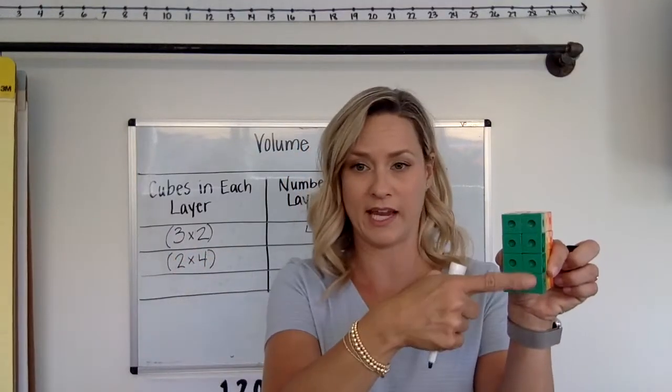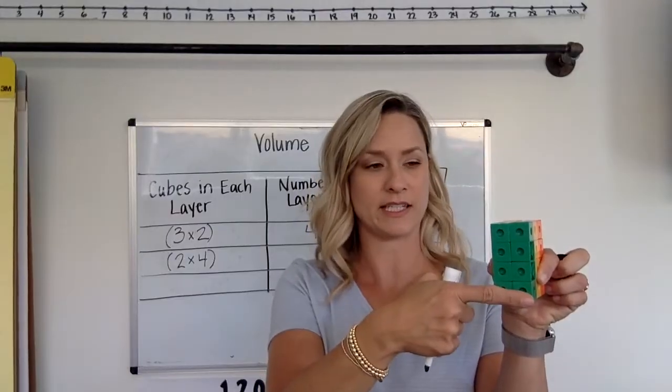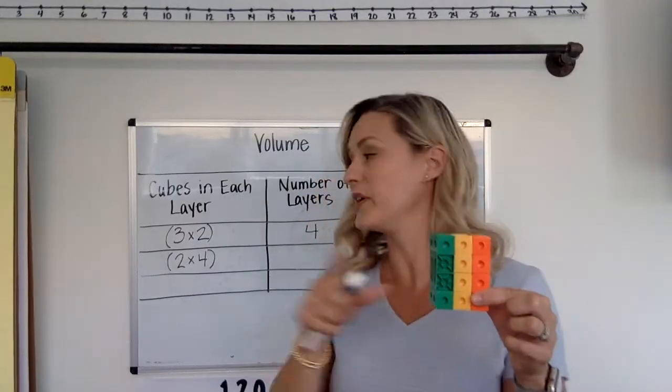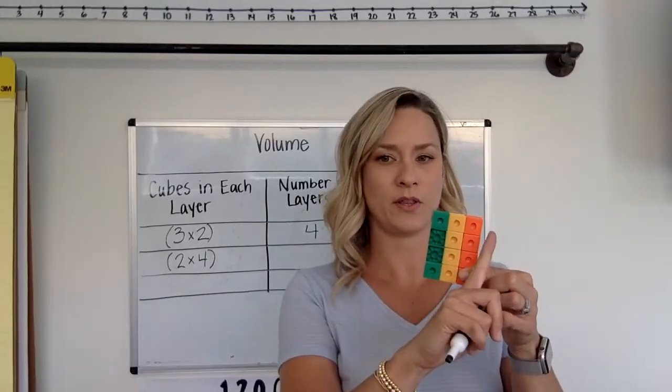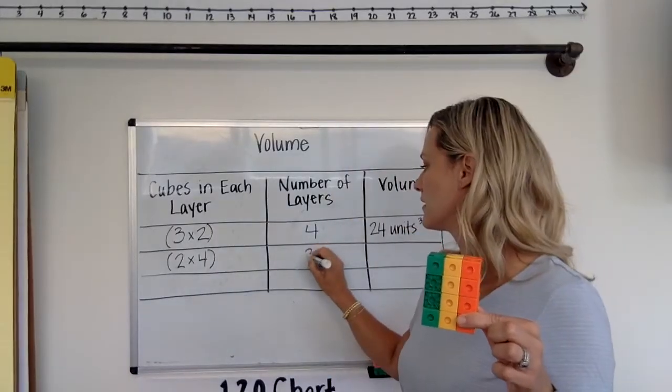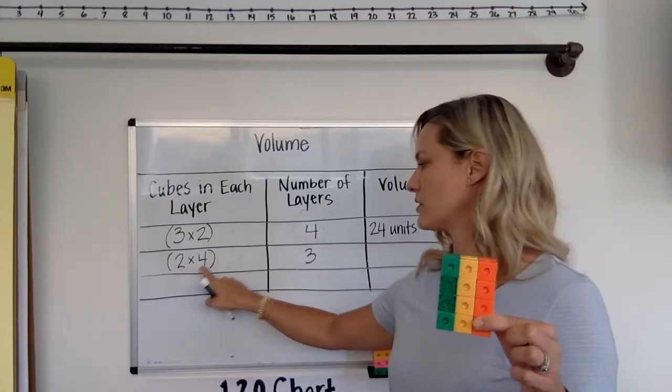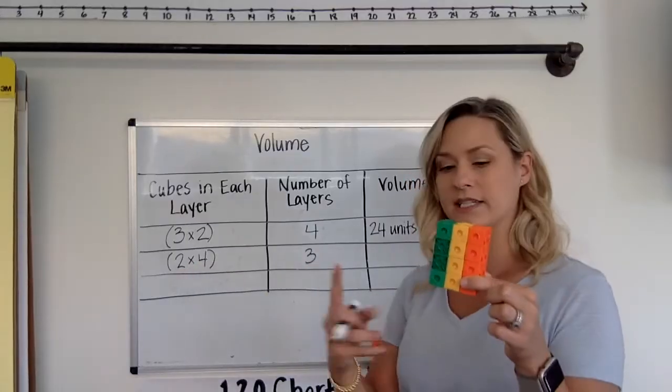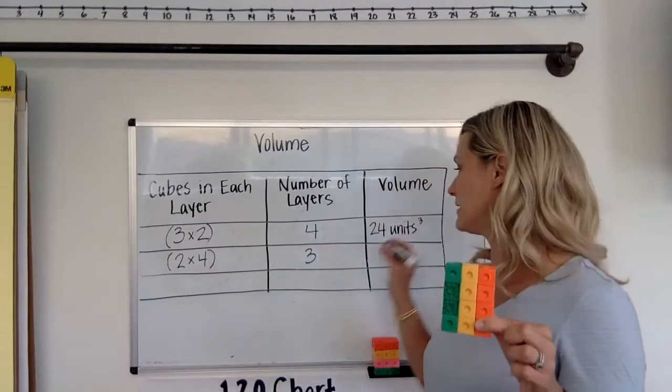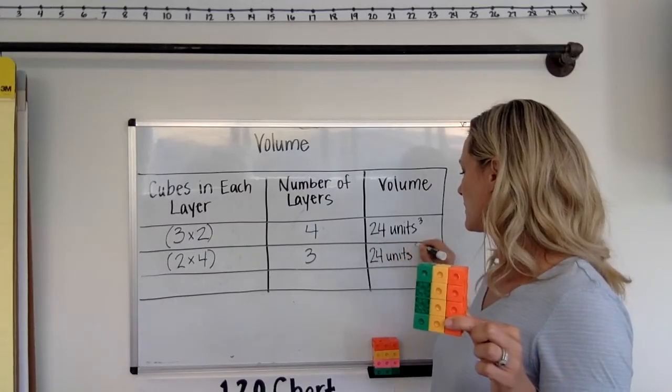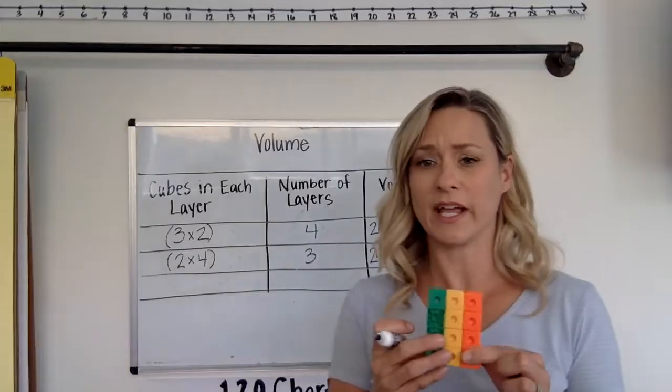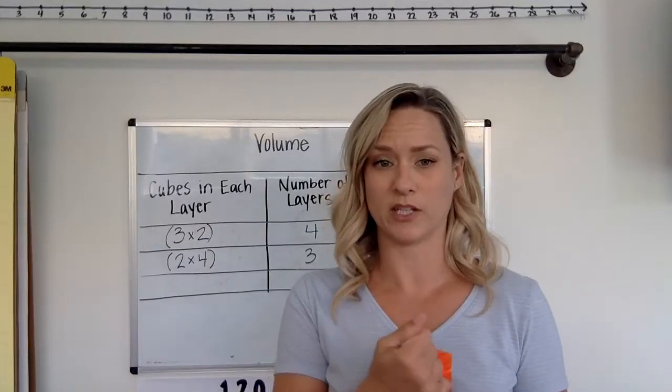That stands for the 8 green pieces here. Then we're going to tell how many layers it has. So 1, 2, 3 layers. And 2 times 4 is 8, and 8 three times is 24 units cubed.